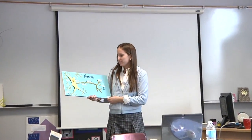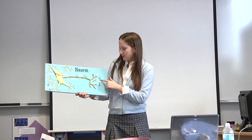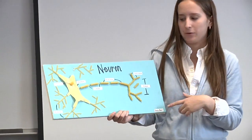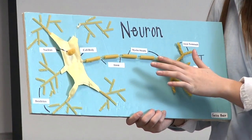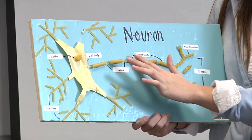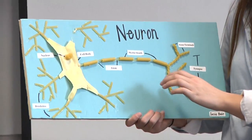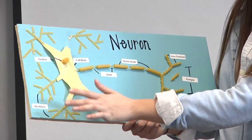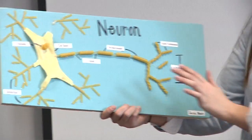This is my neuron, and it's made out of pasta. This is the synapse, which connects the dendrites of the next neuron. These are the axon terminals, and this is the myelin sheath, which covers up the axon. This is the cell body with the nucleus that's trying to fall off, and these are the dendrites that connect to the axon.